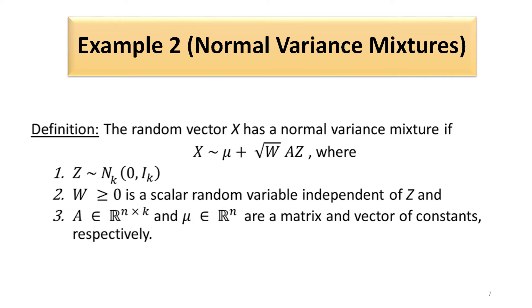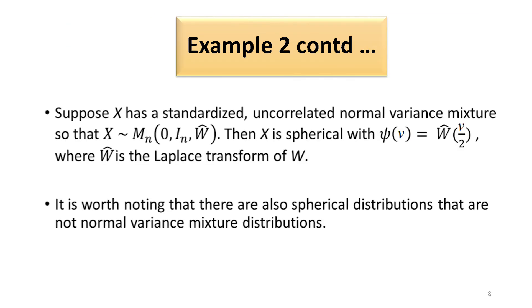Now suppose x has a standardized uncorrelated normal variance mixture. Then we write that x is distributed as MN(0, I, w-hat). x will be said to be spherical if the generator chi(v) is given by w-hat(v/2), where w-hat is the Laplace transform of w. It should be noted that there are also spherical distributions that are not normal variance mixture distributions.